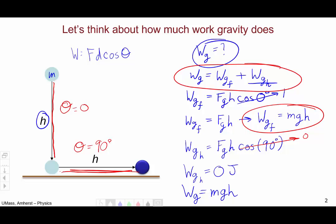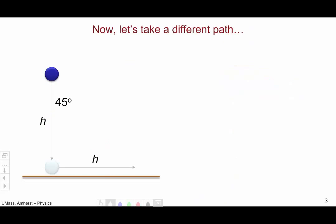Now let's consider moving the ball to the same final position from the same initial position via a different path. Instead of going straight down and straight over, let's move at a 45-degree angle directly from the initial position to the final position. Let's figure out the amount of work done by the force of gravity along this diagonal path.